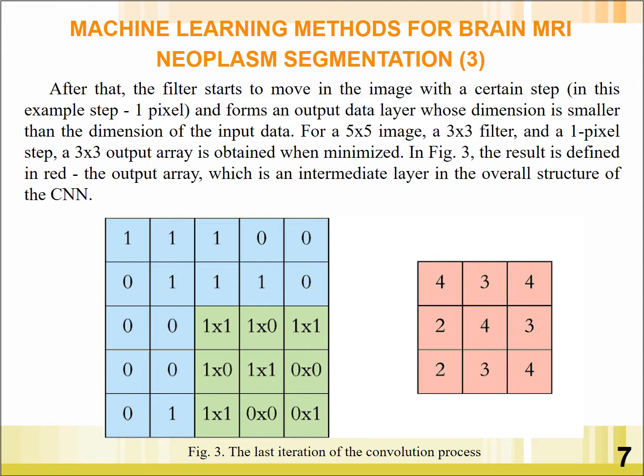The output dimensions are smaller than the dimensions of the input data. For a 5×5 image, a 3×3 filter, and a 1-pixel step, a 3×3 output area is obtained. In Figure 3, the result is highlighted in red — the output area, which is an intermediate layer in the overall structure of the CNN.